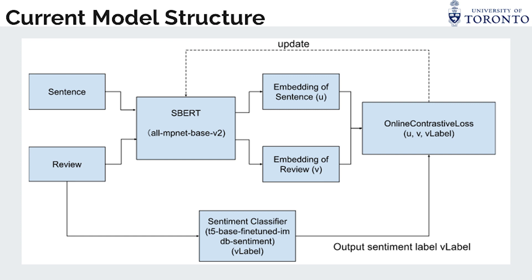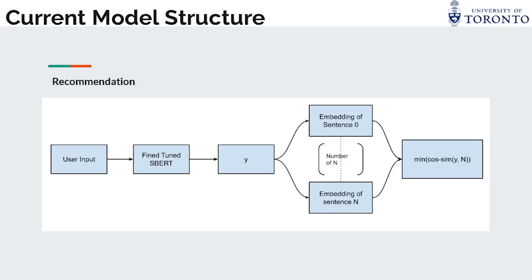Talking about our current model structure, we fine-tune the SBERT model, a sentence transformer that maps sentences to a 768-dimensional vector space. The loss function we are using is online contrastive loss, which minimizes the distance between the sentence and positive reviews and maximizes the distance between the sentence and negative reviews. In this way, our model will be closer to the positive reviews and far away from the negative reviews.